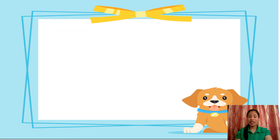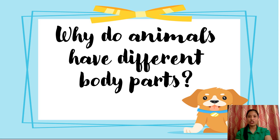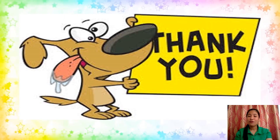Lastly: Body parts of animals help them to survive — that is thumbs up. Before we end, let's reflect on this question: Why do animals have different body parts? Animal body parts help them to survive in their environment. They use them to get their food, to move, and to protect themselves from their enemies. That's all for now. Thank you and I hope all of you learned. See you next time. Bye!